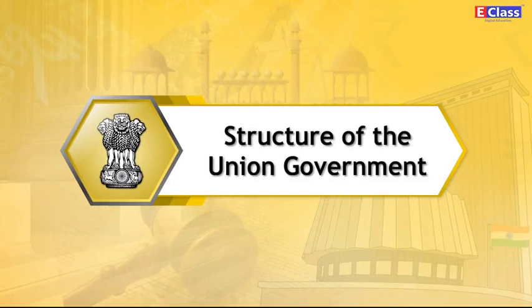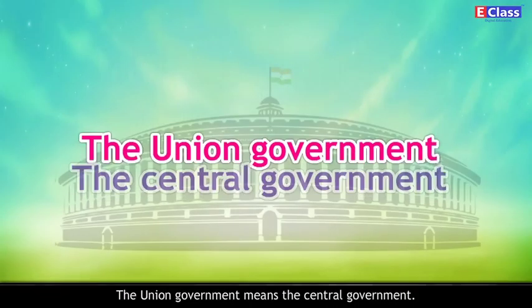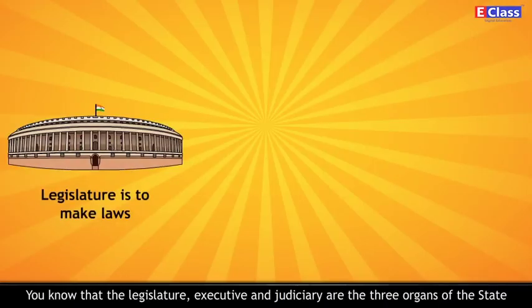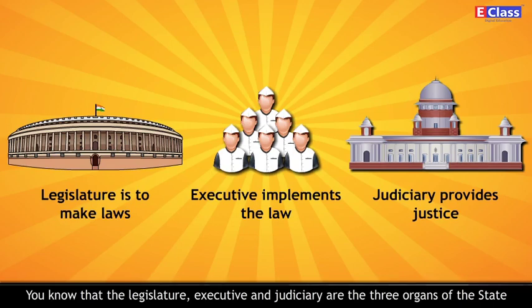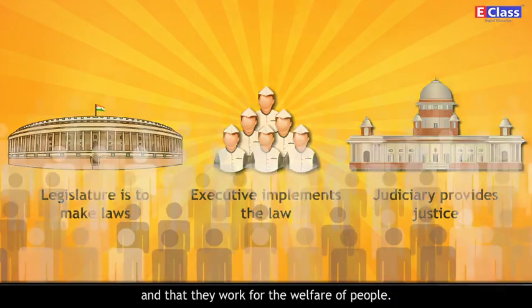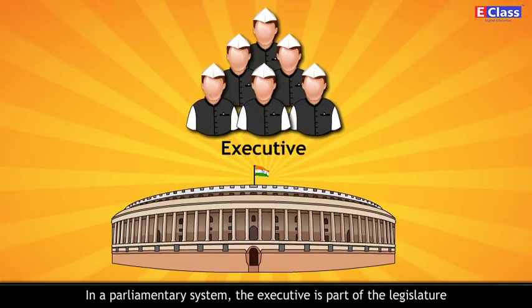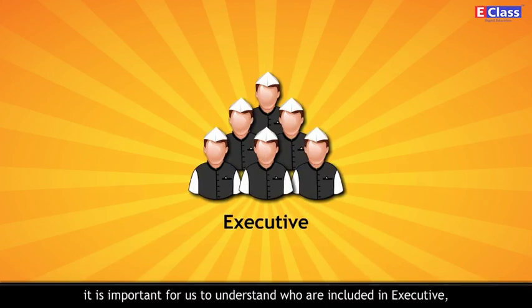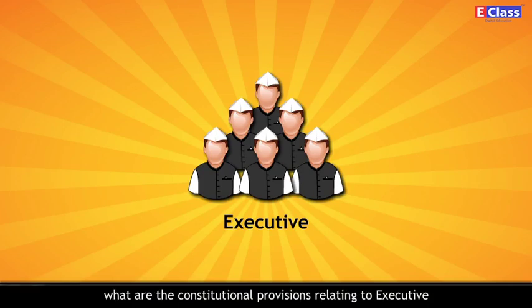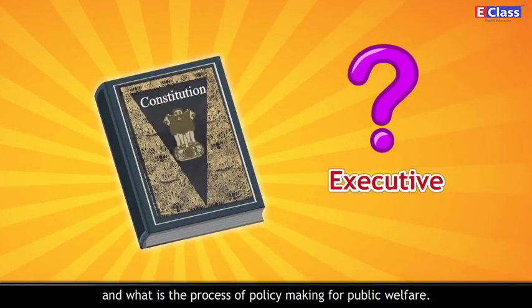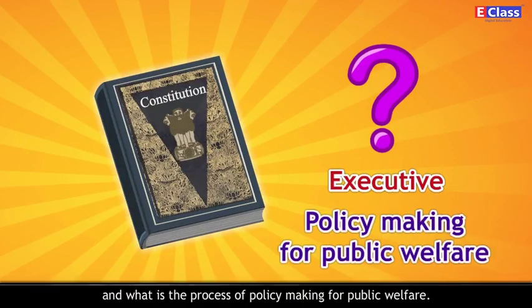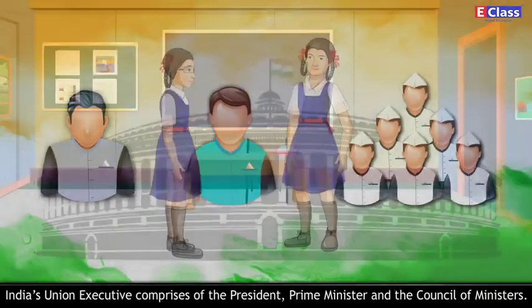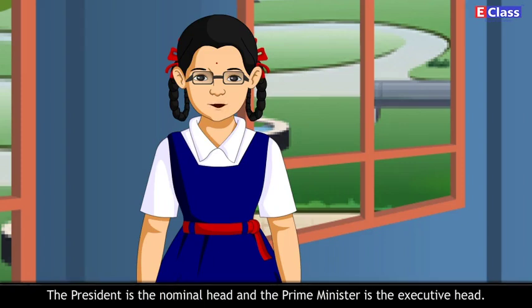The Union Government means the Central Government. The Legislature, Executive and Judiciary are the three organs of the state and they work for the welfare of people. In a parliamentary system, the Executive is part of the Legislature and is responsible to it. India's Union Executive comprises of the President, Prime Minister and the Council of Ministers. The President is the Nominal Head and the Prime Minister is the Executive Head.